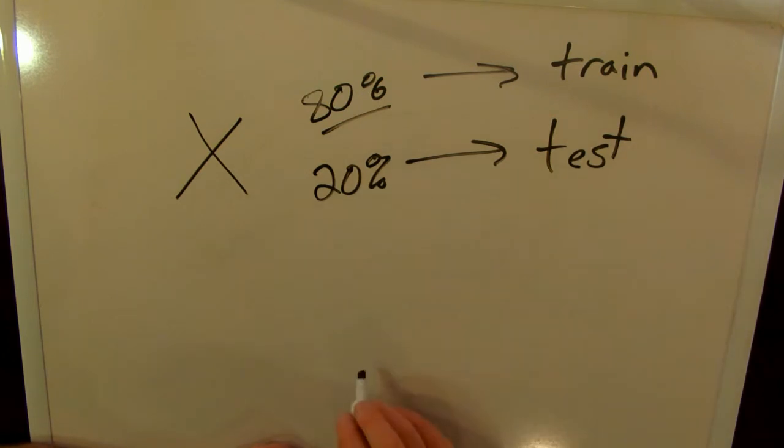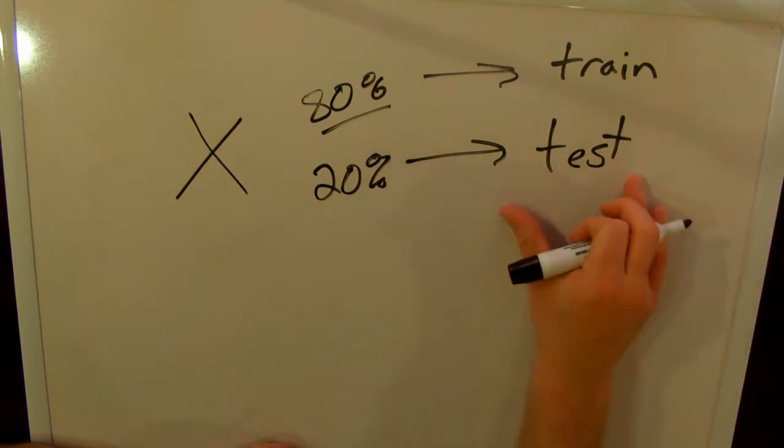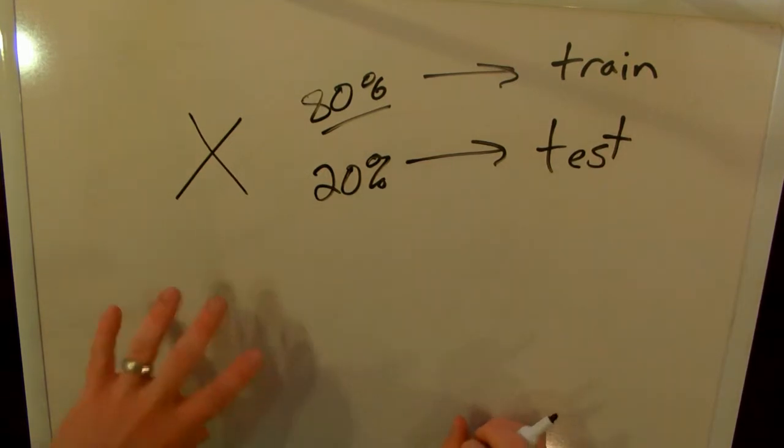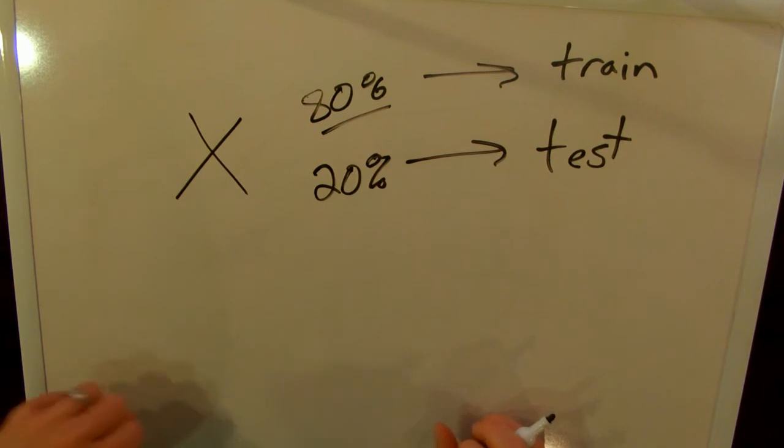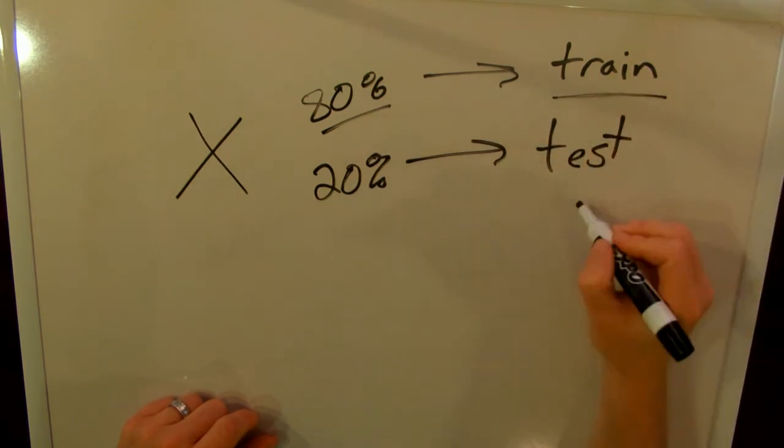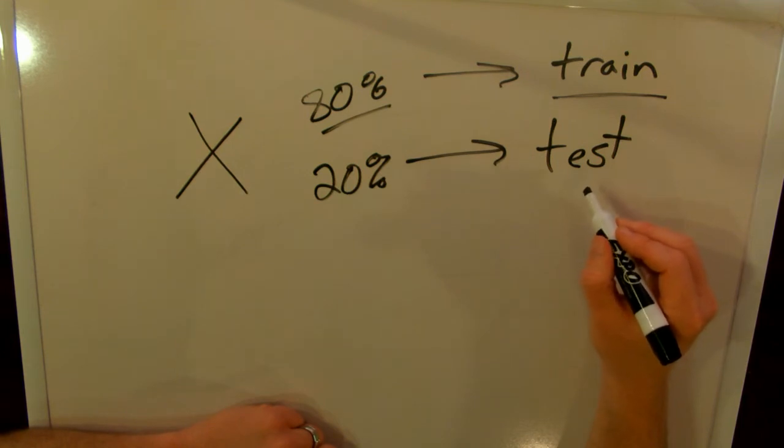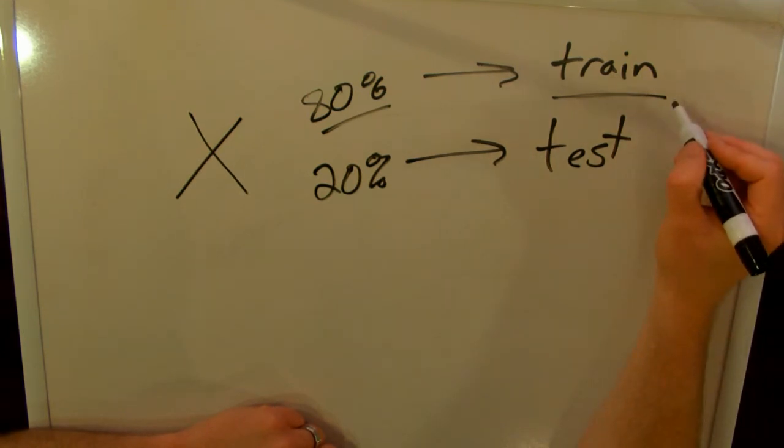If we use our training data, what we can do then is we'll take this test data and we'll hold this out, so we take 20% of the original data, we'll hold it out, we'll put it away. We'll show the computer the training data but not the test data, and then once the computer has learned some general rule using only the training data, we can use the test data.